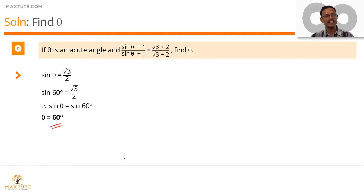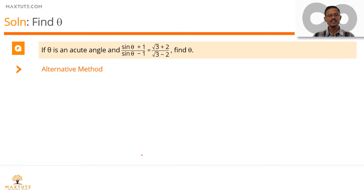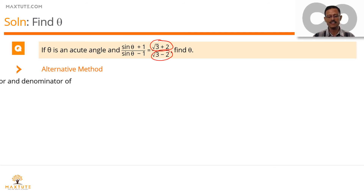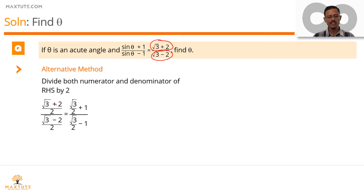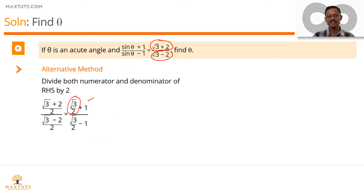Let's look at an alternative method. In this approach, we take the RHS — (√3 + 2)/(√3 − 2) — and divide both numerator and denominator by 2. This gives (√3/2 + 1)/(√3/2 − 1). On the LHS we have (sin θ + 1)/(sin θ − 1), and on the RHS we now have a value plus one divided by the same value minus one.